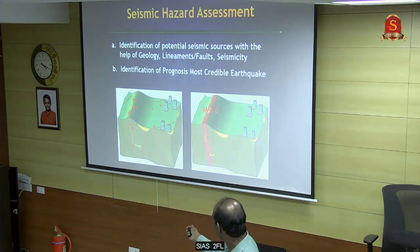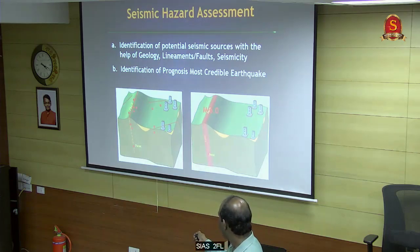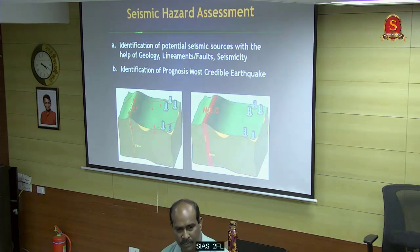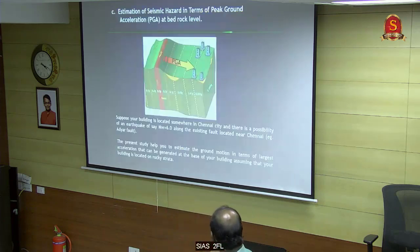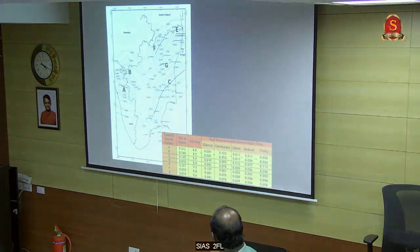This technique is generally used: if there is a fault and your building is nearby, from that fault many earthquakes occur. Based on the energy dissipating from that fault to your building location, you can calculate the PGA value. That is one technique. Another is iso-seismal maps.